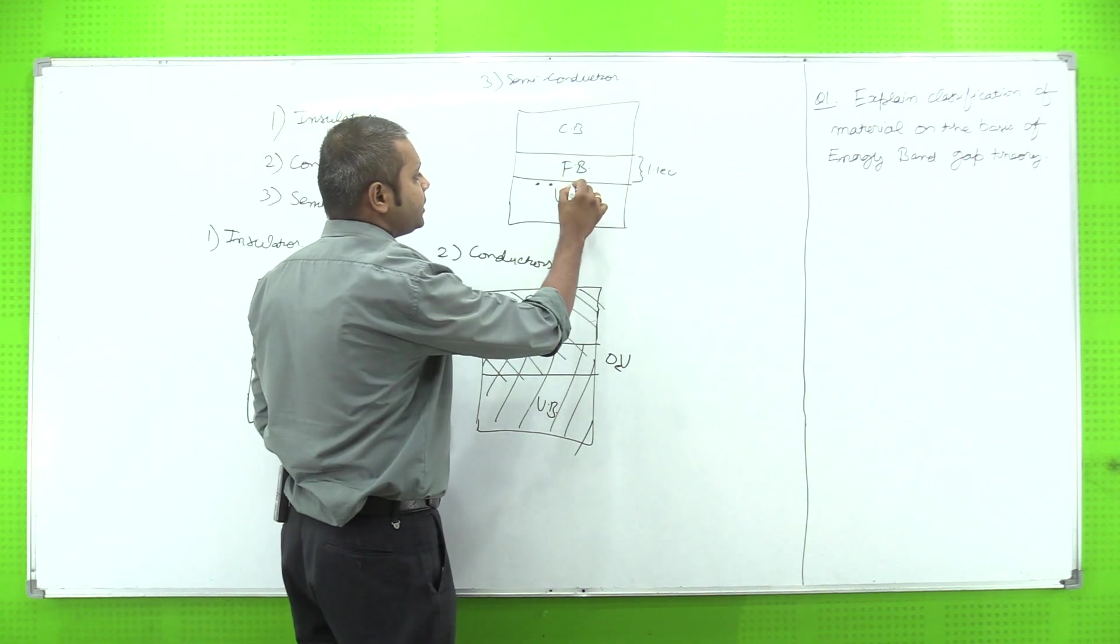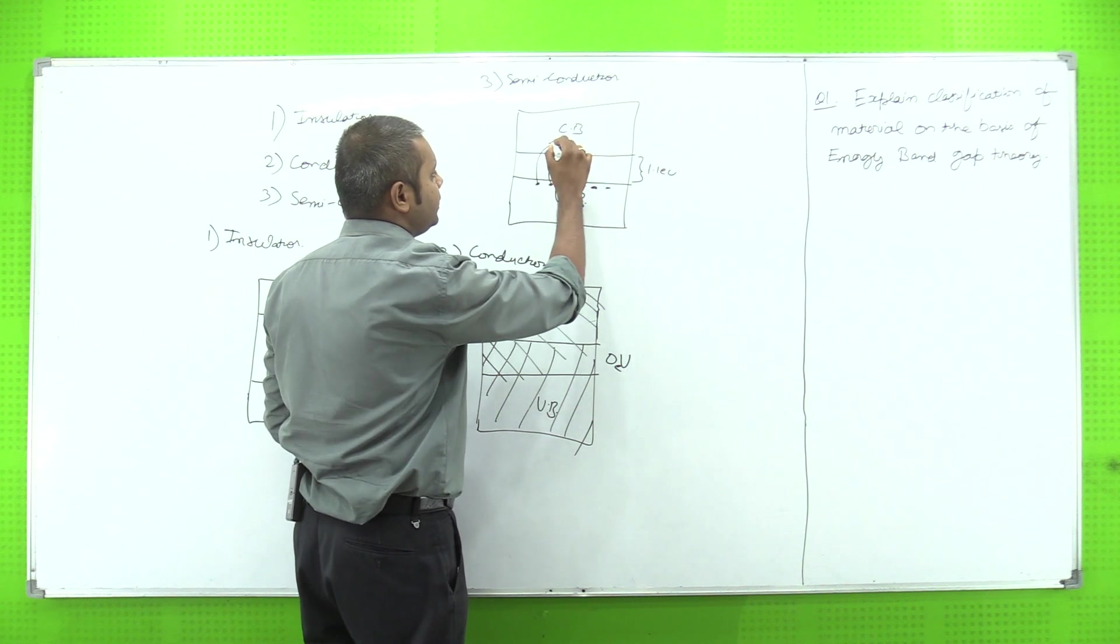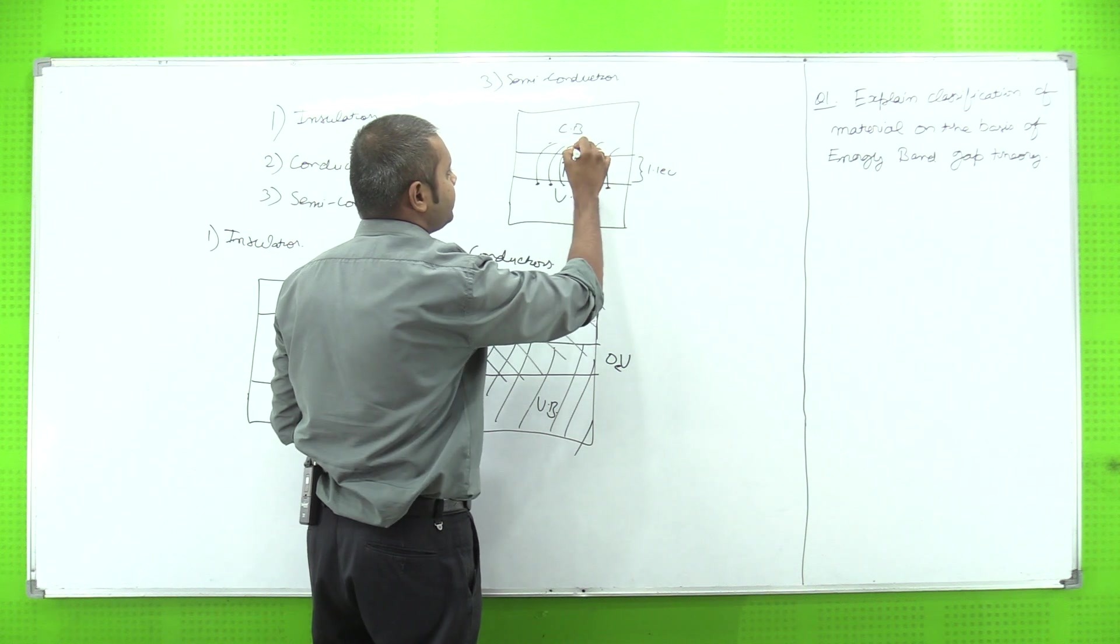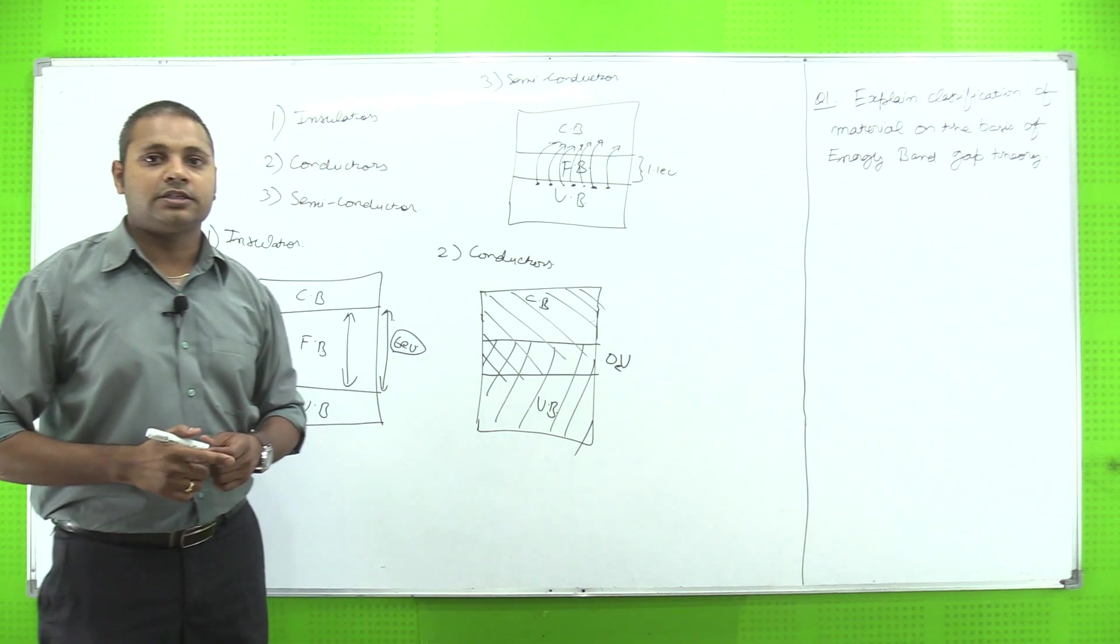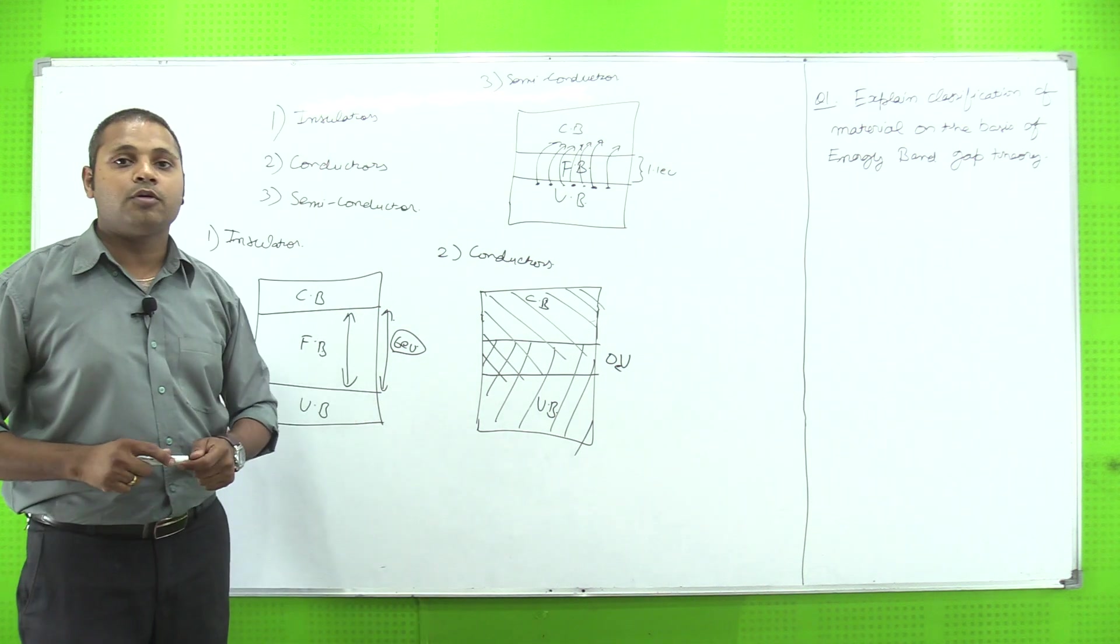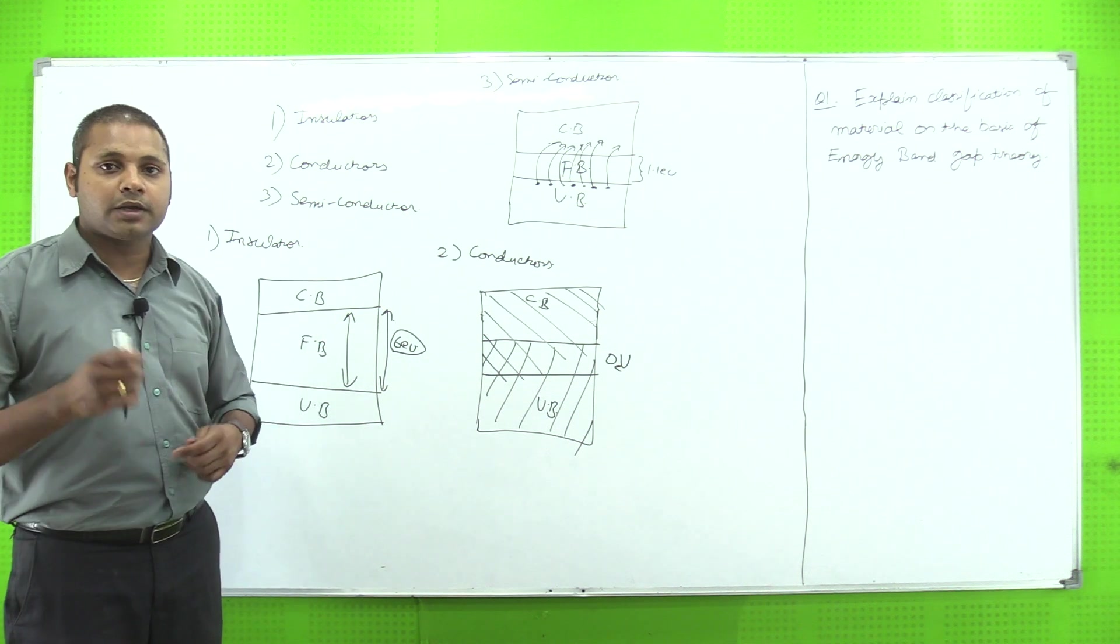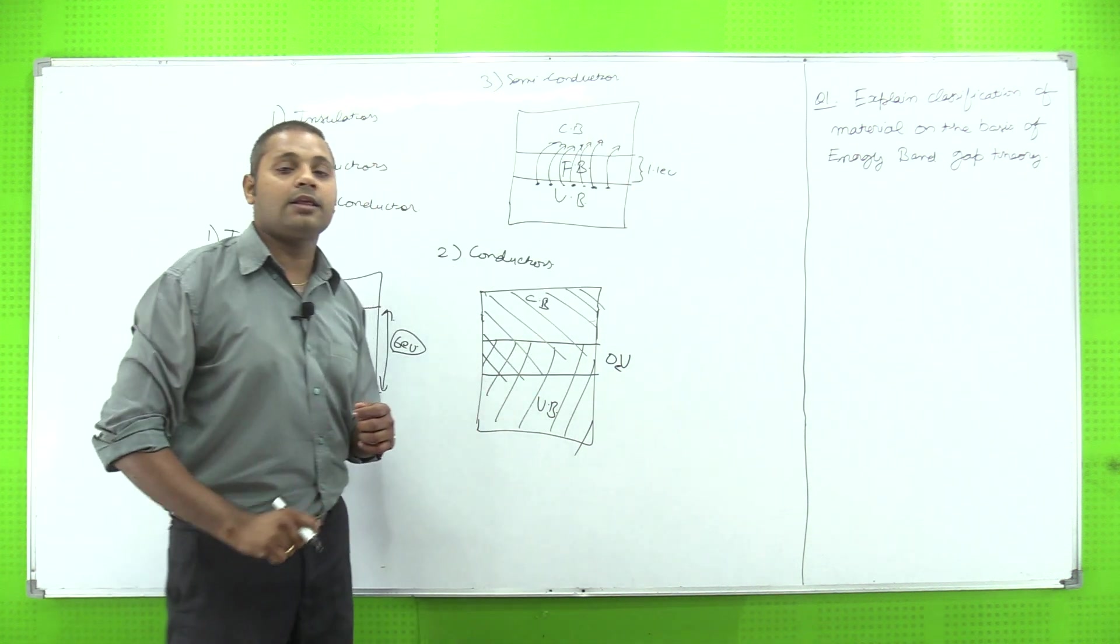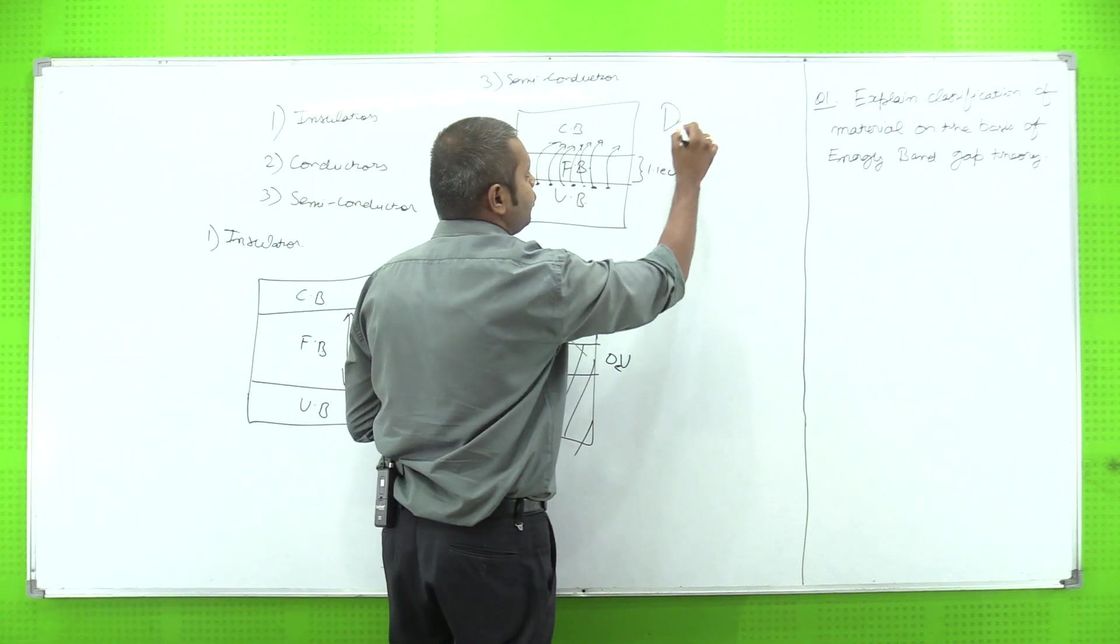Valence band se jo bhi mere electrons hai can easily jump in conduction band and helps in, or we can say, provide the electrons free for conduction. This is all about energy band diagram of semiconductor, insulator and conductor. Abhi maine jaisa bataya hai ki semiconductor ke andar hum jab bhi koi bhi agent add karte hai, toh conductivity increase ho jati hai. That process is called as doping.